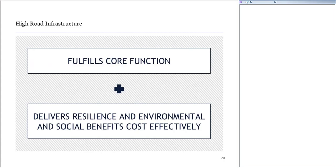So what is high road infrastructure? It's really a triple bottom line concept as applied to the public sector. It's infrastructure which fulfills its core function — whether that's providing energy, managing stormwater, or transporting people — but also delivers resilience, environmental, and social benefits cost-effectively.